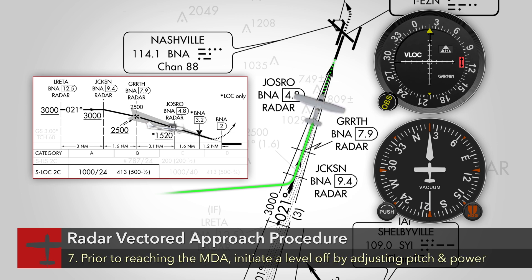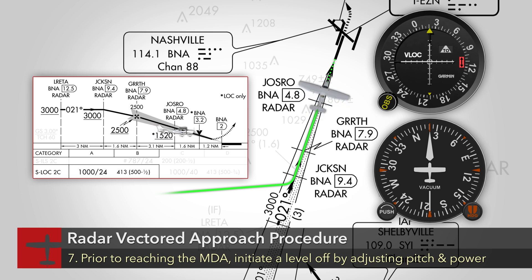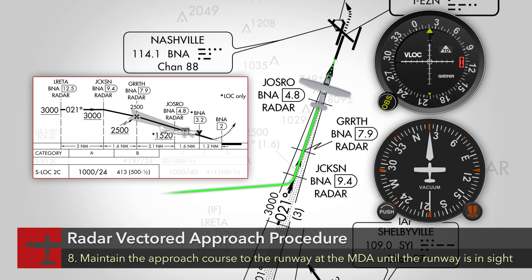Prior to reaching the minimum descent altitude, initiate a level off by adjusting pitch and power so as to maintain the MDA at the appropriate instrument approach airspeed. Maintain the approach course to the runway at the MDA until the runway environment is in sight.